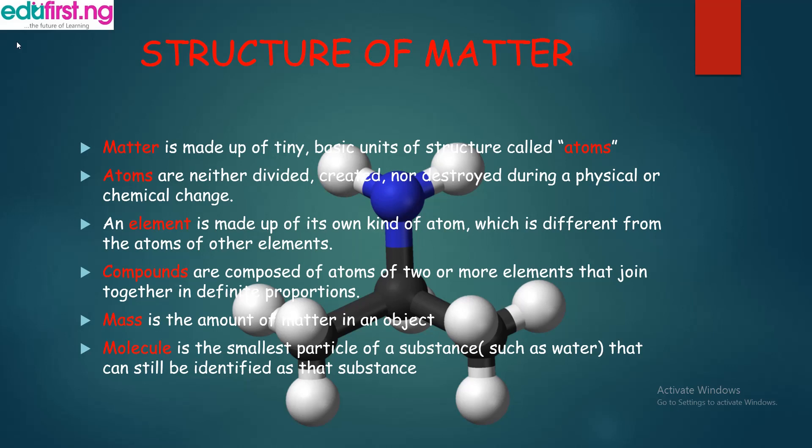Part of them is atom, an element. We have compounds, mass, molecule, and so on. We'll be looking at each definition of all these structures. Atoms are neither divided, created, nor destroyed during a physical or chemical change. An element is made up of its own kind of atom — in every element, we have a kind of atom which is different from the atoms of other elements.